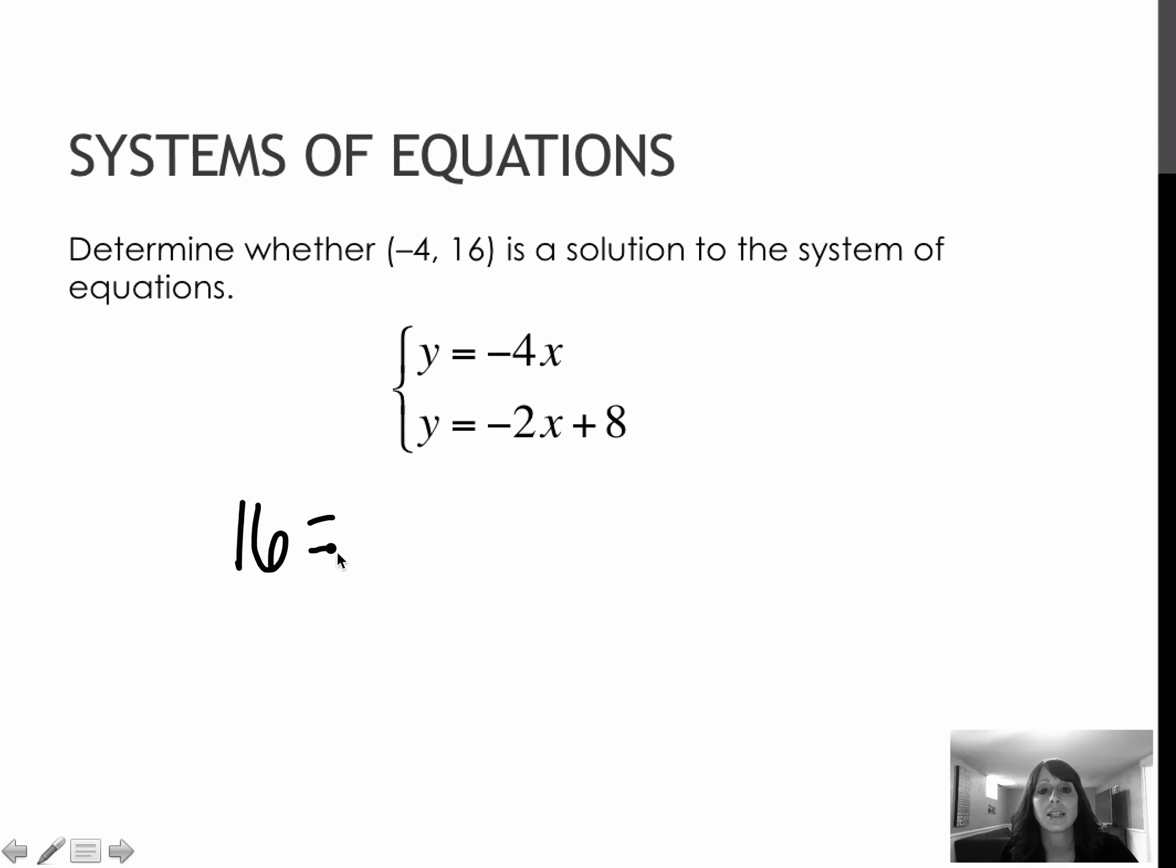Negative 4 times negative 4 is 16. So far it's good because (-4, 16) is a point on the line of y = -4x. Now I have to do the same.